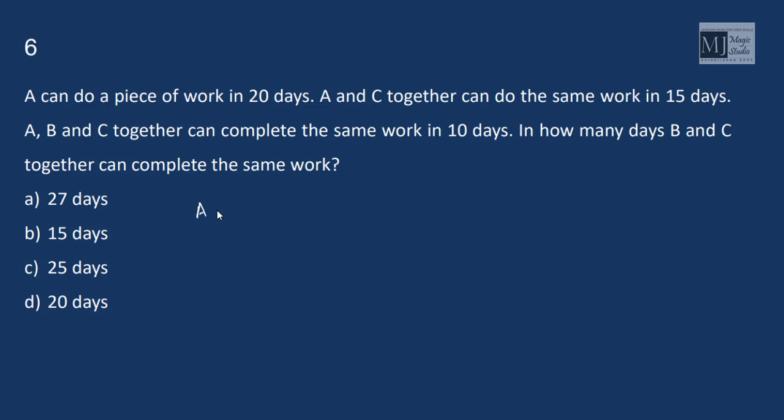A can do a piece of work in 20 days. A and C together can do in 15 days. A, B, C can do it in 10 days. Then in how many days B and C together can do? So if we see from A, B, C, if I deduct this A, I'll get B and C. So I just need to use the deduction formula. Deduction formula is product by difference. So this would be 20 into 10 by 20 minus 10. 200 by 10 is 20 days.